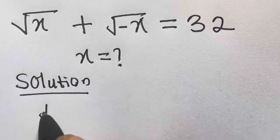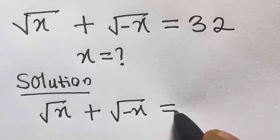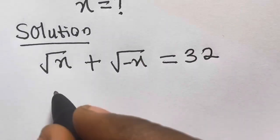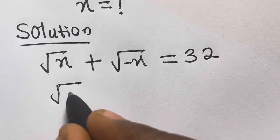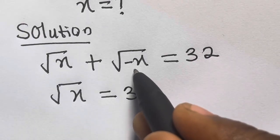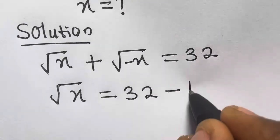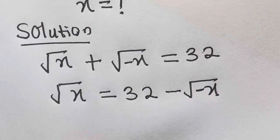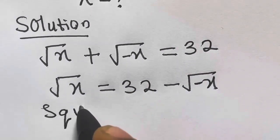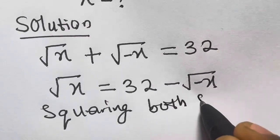We have square root of x plus square root of minus x equals 32. From here, we transfer square root of minus x to the other side, so it becomes minus square root of minus x. Then, by squaring both sides: